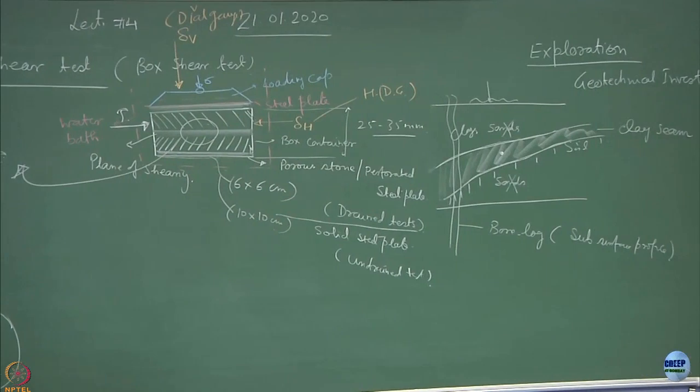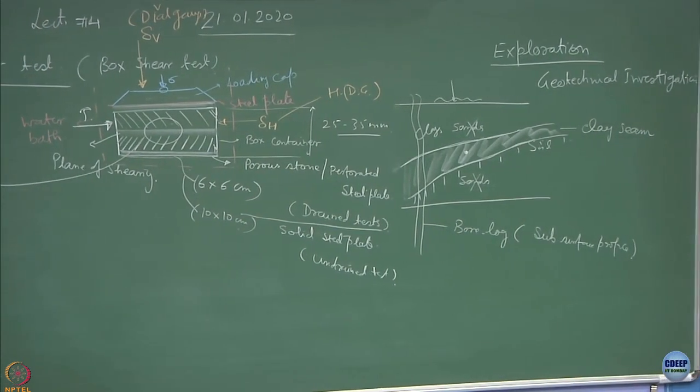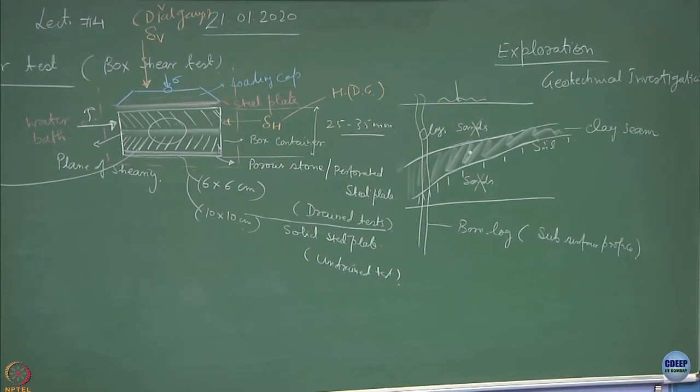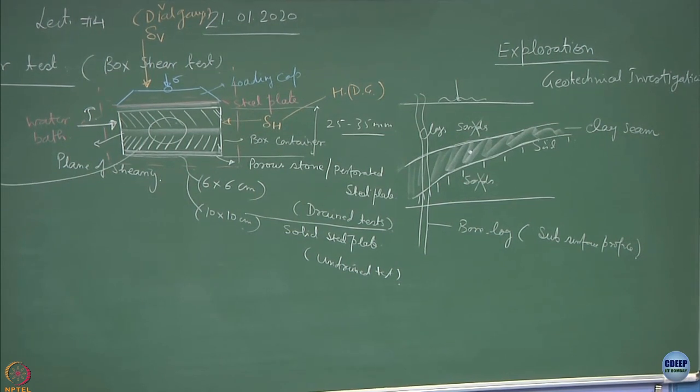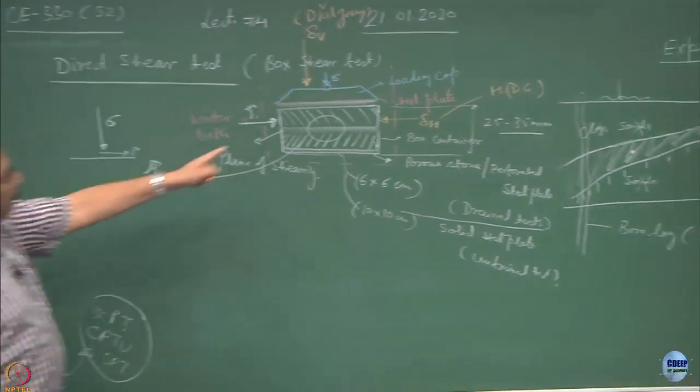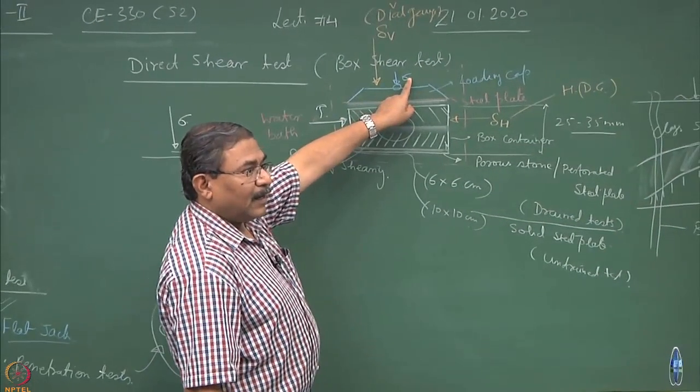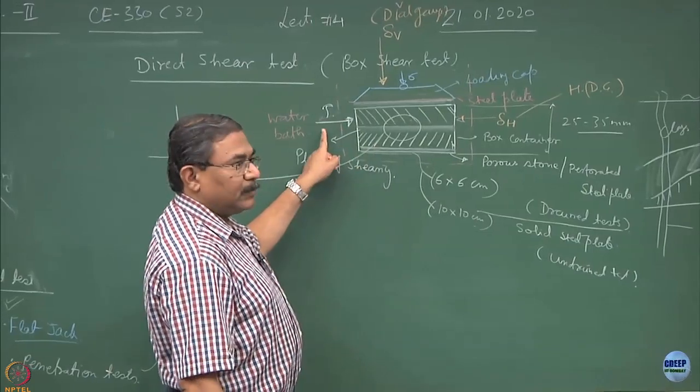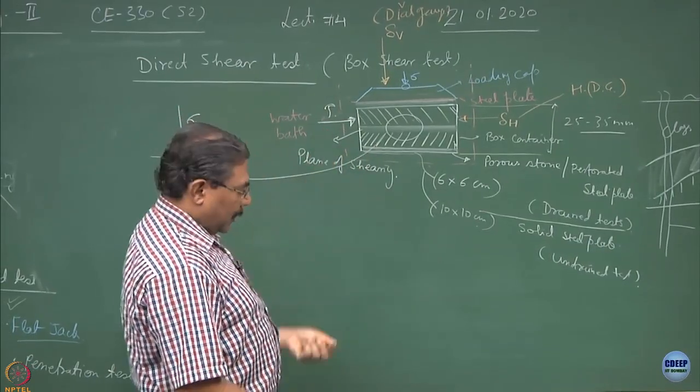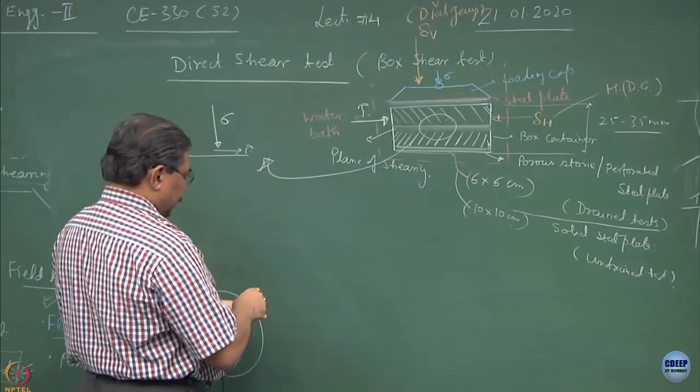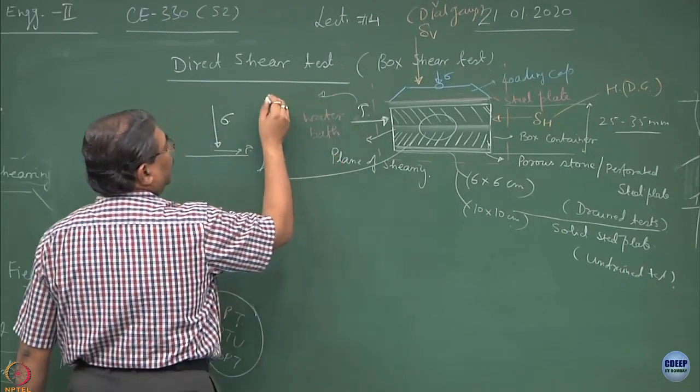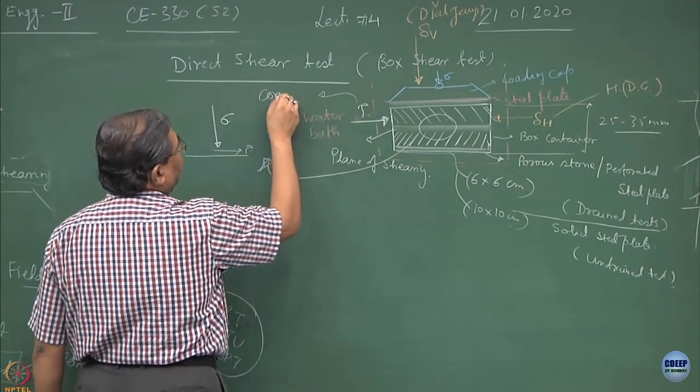Essentially, we tried to measure vertical strains, vertical deformations, axial deformations or axial strains by keeping a certain value of normal stress and changing the value of shear stress. And as you have seen in the video, tau is changed by constant rate of shearing.